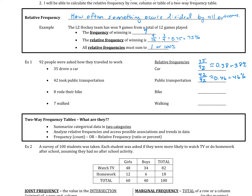For bike, that's 8 out of 92, which is approximately 0.09, or 9%. And finally, we have 7 walkers. Since 7 is close to 8, it should be a close number — 0.08, which is 8%. So you're basically calculating the percentages of basic relative frequencies.